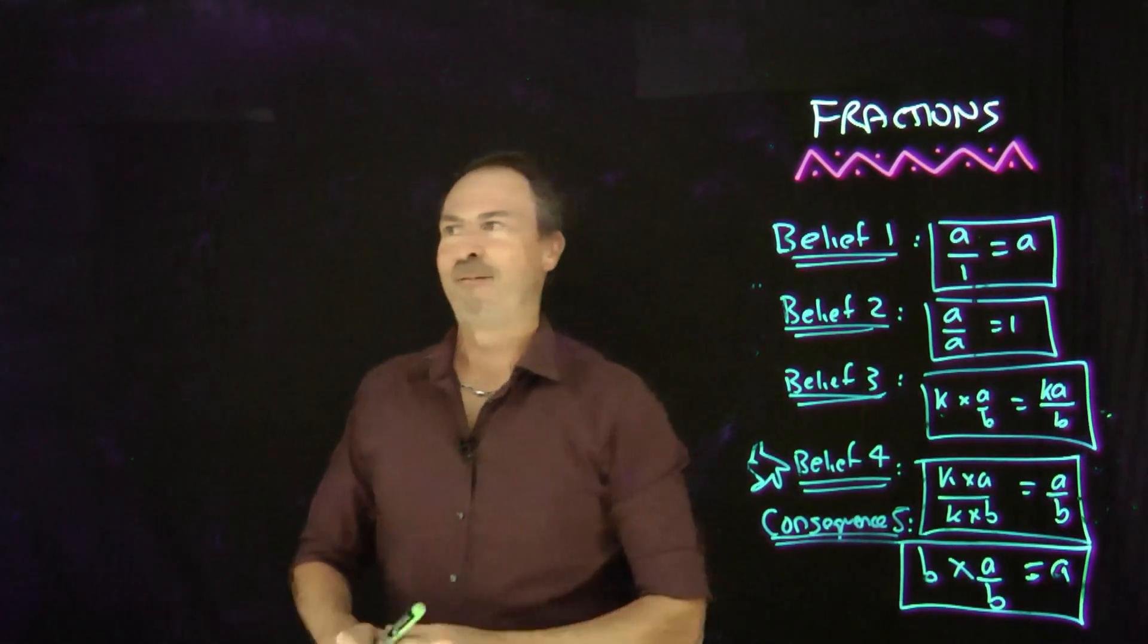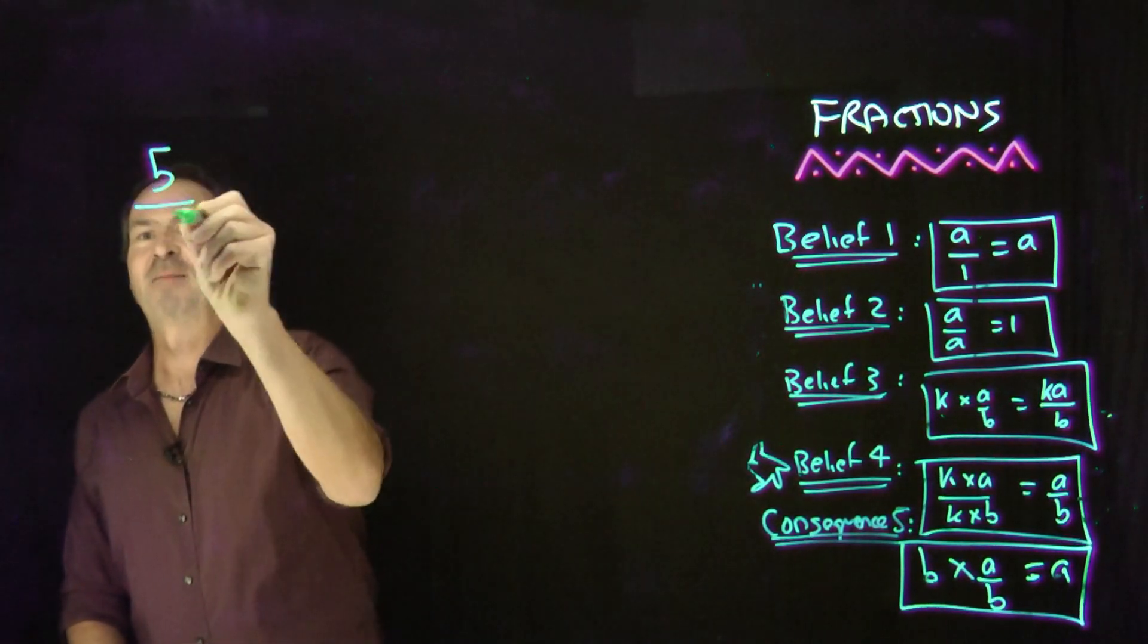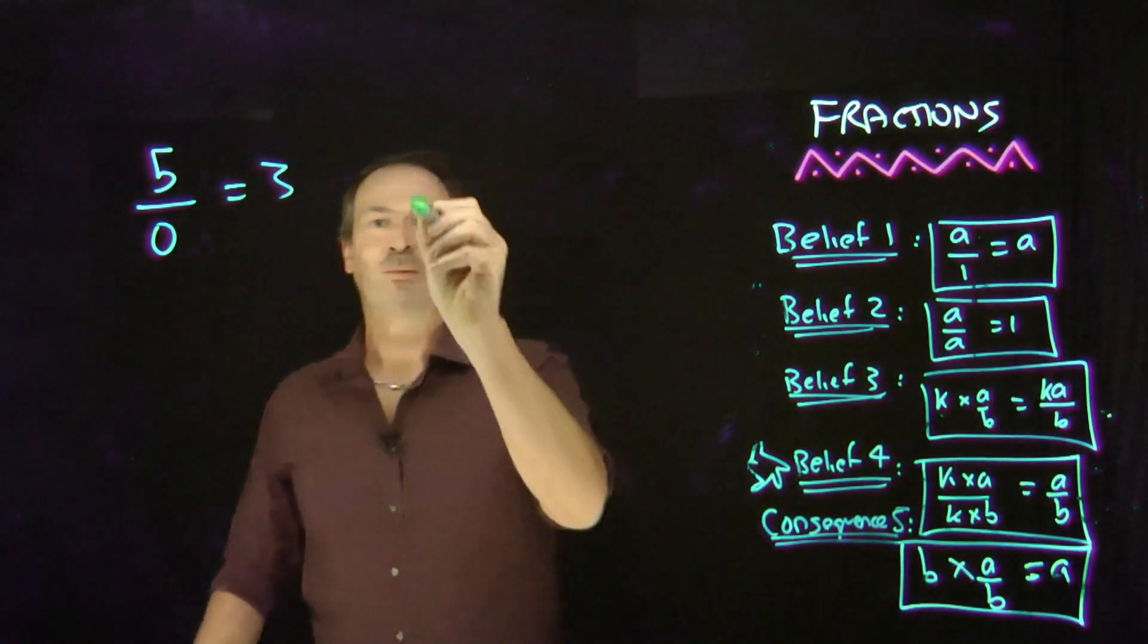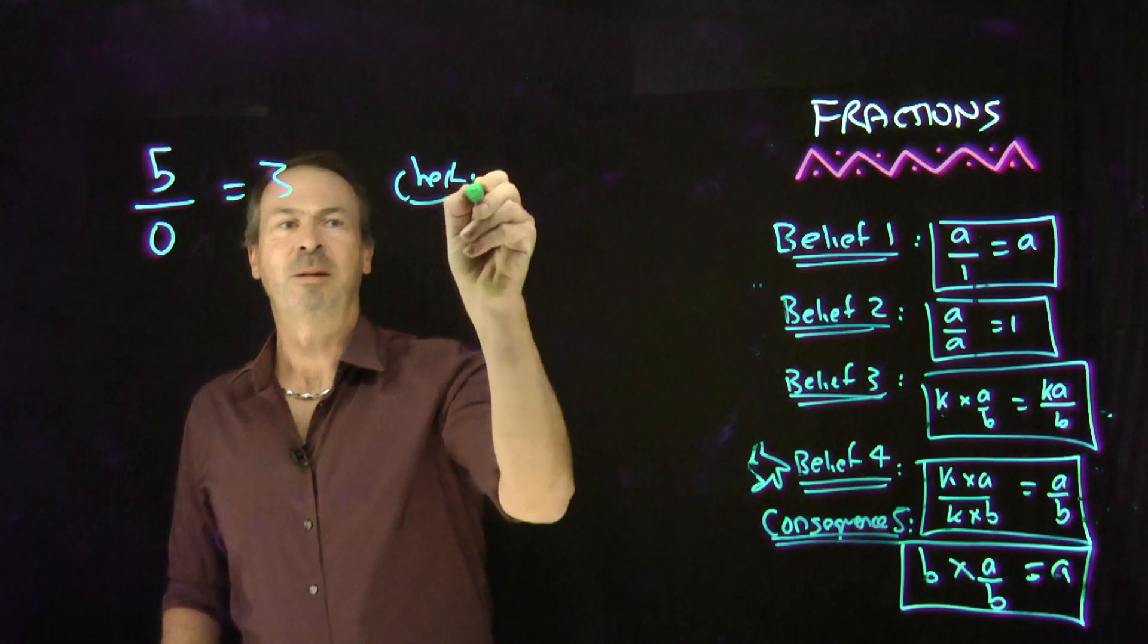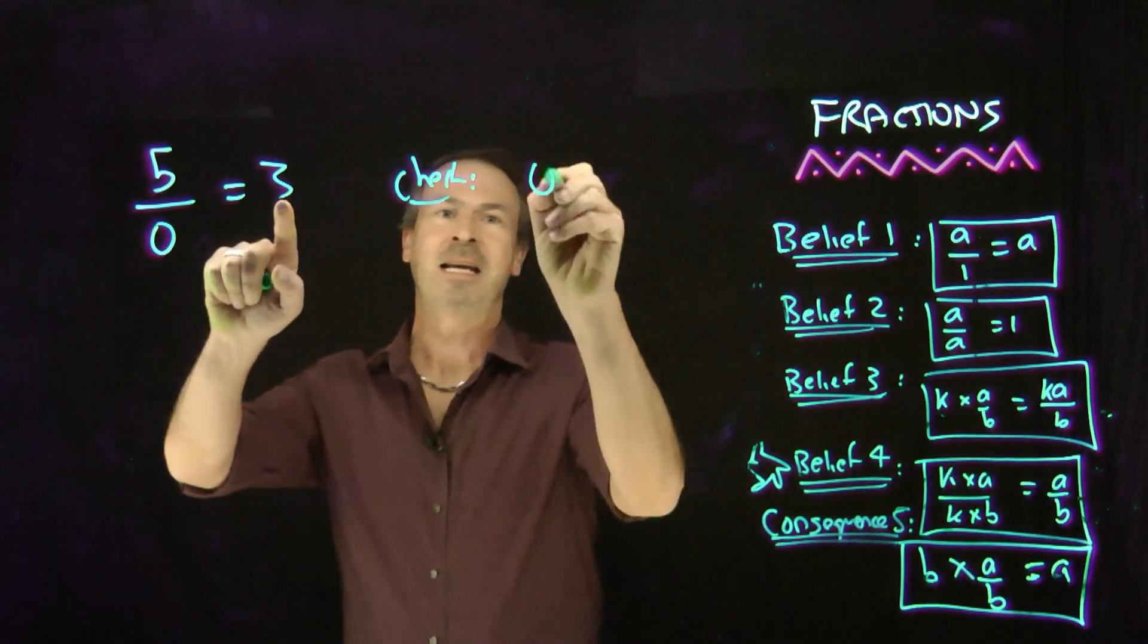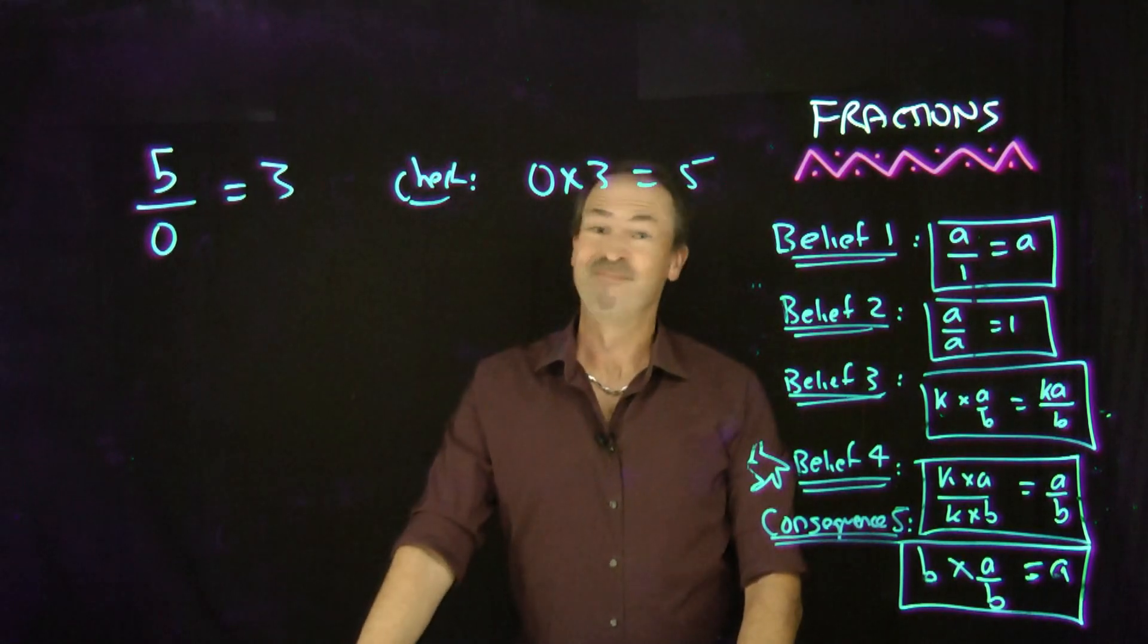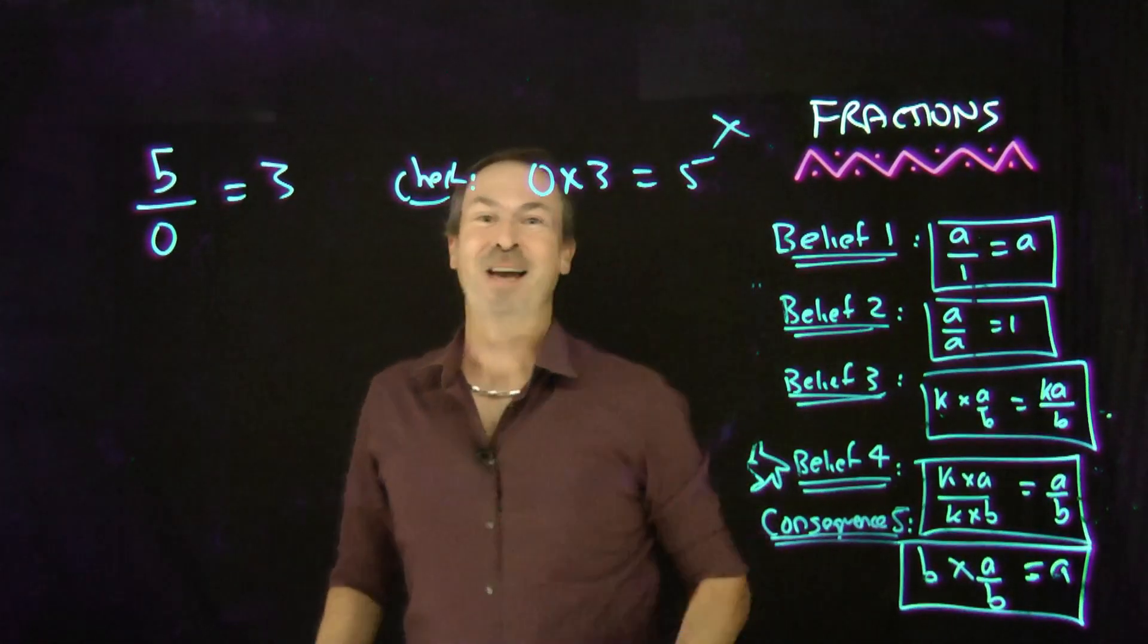Here goes. Let me try, say, 5 divided by 0. I claim the answer is 3. Let's check. What's my check going to say? If I follow consequence number 5, it says that 0 times 3 should equal 5. Does it? No. 0 times 3 is not 5. Ah, failed.